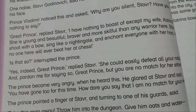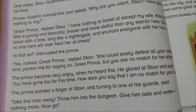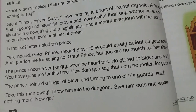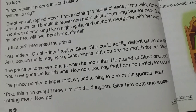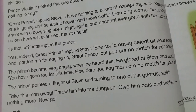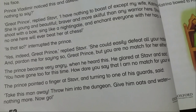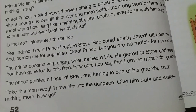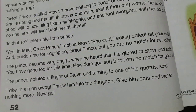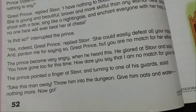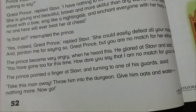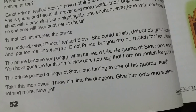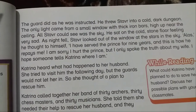'Pardon me for saying so, great Prince, but you are no match for her either.' The Prince became very angry when he heard this. He glared at Stavr and said, 'You have gone too far this time! How dare you say that I am no match for your wife!' The Prince pointed a finger at Stavr and, turning to one of his guards, said, 'Take this man away! Throw him into the dungeon. Give him oats and water, nothing more. Now go!'